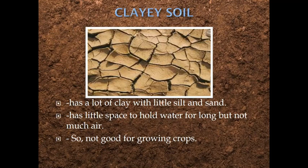Clay soil has a lot of clay with little silt and sand. It is brown in color. The soil particles of clay soil have little space to hold water and not much air. So this is also not good for growing crops.